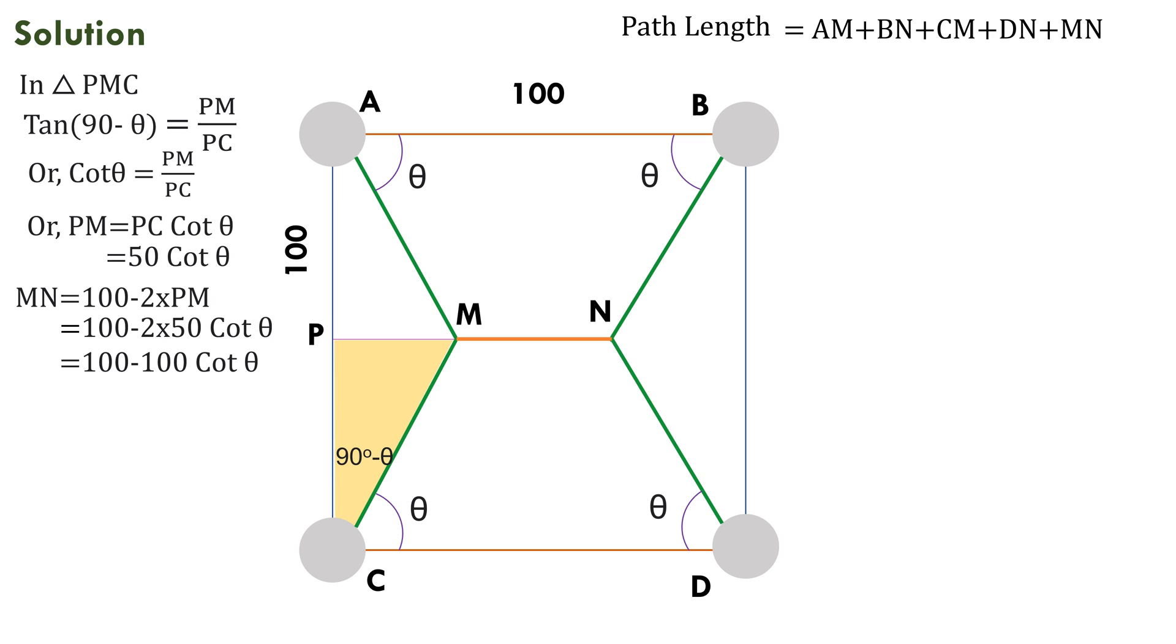Now our task is to find the remaining length. For this cos(90 minus theta) equals PC by MC. Or sin theta equals 50 by MC. Or MC equals 50 by sin theta. Or MC equals 50 cosec theta.